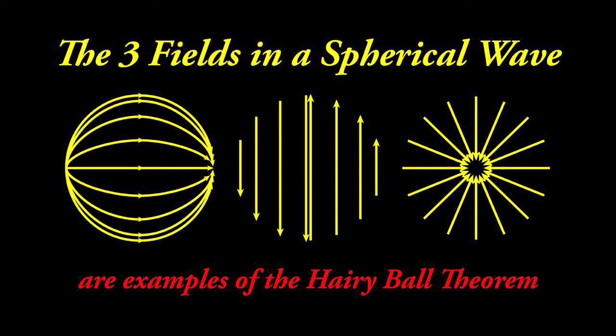Mathematicians should take note how the Hairy-Ball theorem perfectly applies to the three fields in these spherical waves. The two fields on the surface of the spherical wave are: first, the primary field with its hair sweeping from pole to pole, and second, the secondary field with its hair counter-rotating around the two hemispheres. The Hairy-Ball theorem even applies to the gravitational field. In my opinion, examining the three fields in a spherical wave is the best possible physical example of Poincaré's Hairy-Ball theorem.